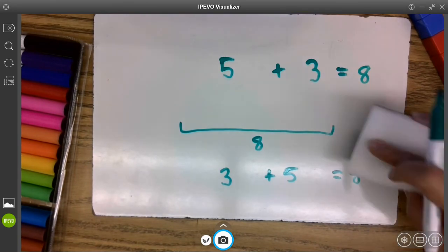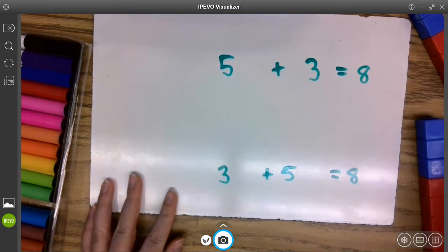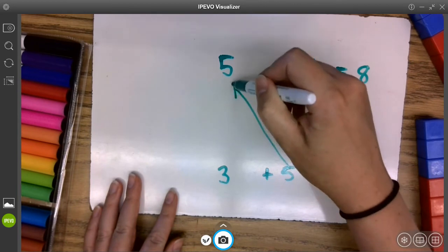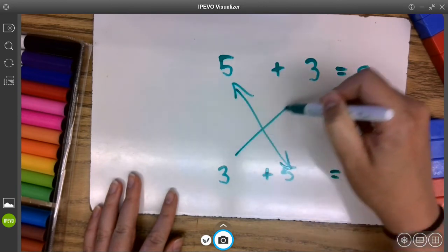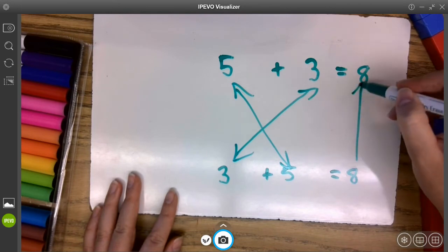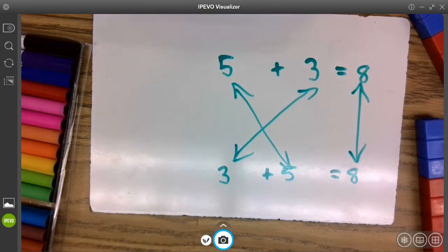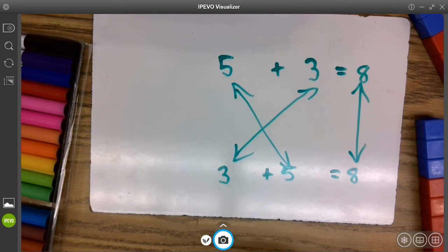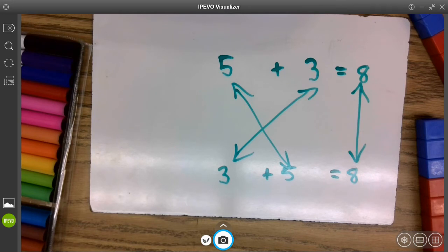So I can see here that the addends stayed the same. They just are in a different order. My sum doesn't change. It will remain eight every time I put five and three together, even if I put the three first. You can add in any order to get the same sum.